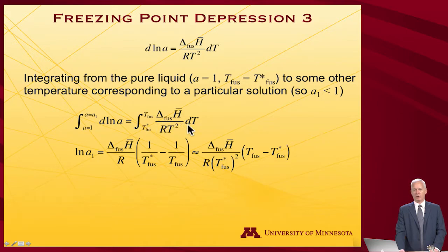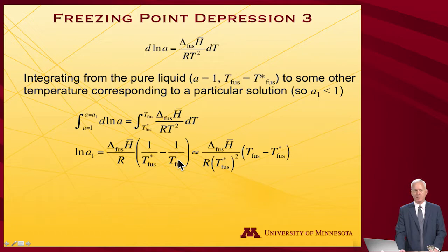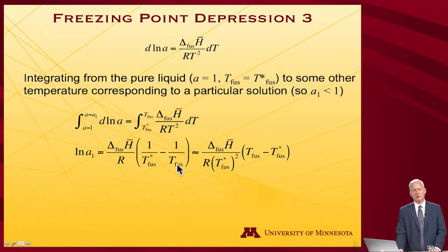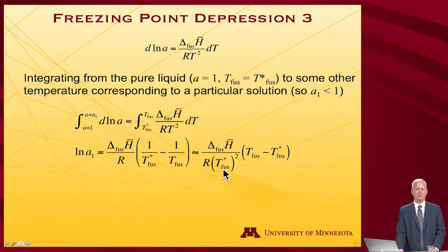Meanwhile, integrating 1/T² dT gives 1/T evaluated at the two endpoints: 1/T_fusion minus 1/T*_fusion. Putting that over a common denominator, I get T_fusion over the product of the two temperatures minus T*_fusion over the product. But if the temperature hasn't changed much, the product of the two is approximately equal to the square of the pure substance fusion temperature. So I'll use that approximation, since we're not working with extremely high concentrations.